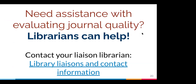If you need assistance evaluating journal quality and these rubrics are useful, librarians can help. I suggest starting with your liaison librarian — every department has a library liaison. If you're not sure who your liaison is, there's a link on this slide. Your liaison is really your first point of contact with the library, and I can help with this too, but it's best to start with your liaison and they can loop me in as needed.